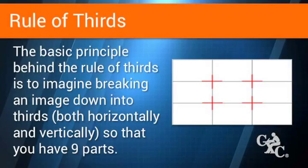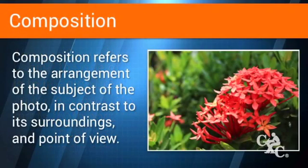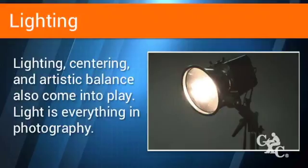We would now look at some of the factors affecting the creation of digital media content. The first one is called the rule of thirds. The basic principle behind the rule of thirds is to imagine breaking an image into thirds, both horizontally and vertically, so that you have nine parts. Composition refers to the arrangement of the subject of the photo in contrast to its surroundings and point of view. Lighting is very important — the basic job of a photographer is to capture light on a still image. A photographer spends time fiddling with white balance, thinking about exposure, tone, and contrast — all about trying to best capture the light that reflects back off the subject.